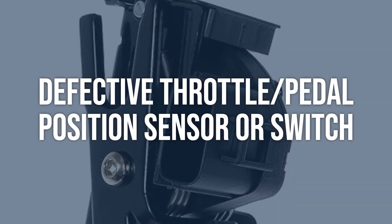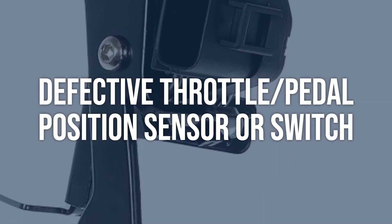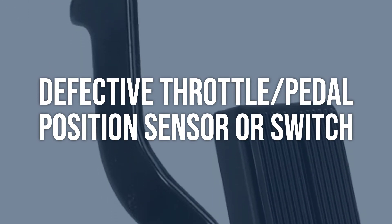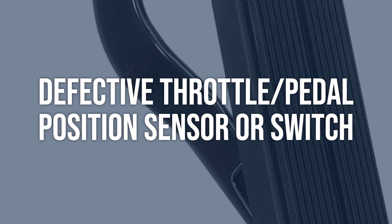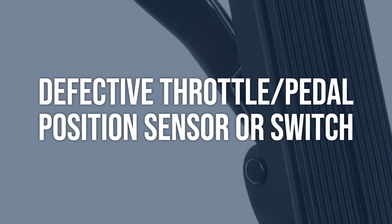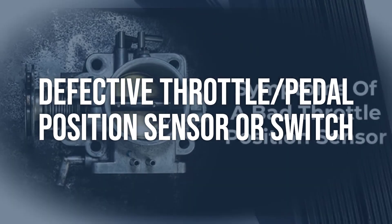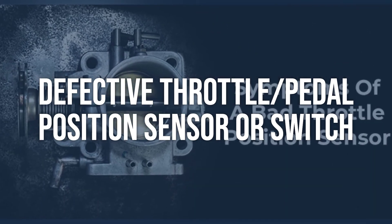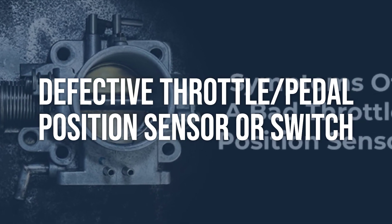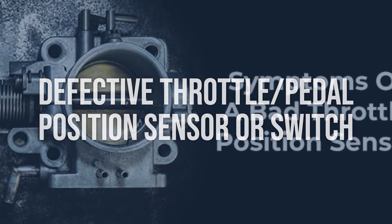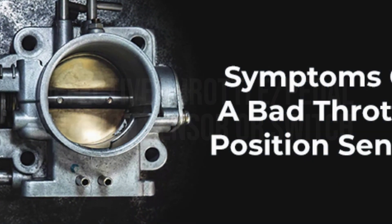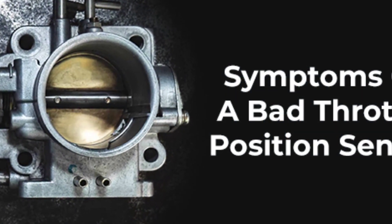A further cause is a defective throttle/pedal position sensor or switch. Test the throttle/pedal position sensor or switch using a multimeter to check for proper voltage output according to the position of the throttle or pedal, and compare the readings to the manufacturer specifications. Replace the defective throttle/pedal position sensor or switch with a new, compatible part, and ensure proper installation and calibration according to the manufacturer's guidelines.